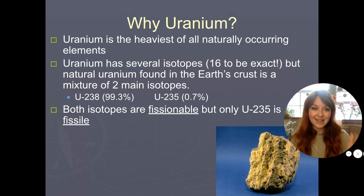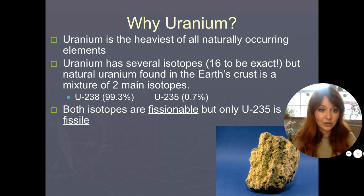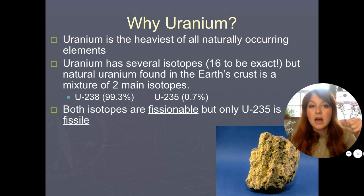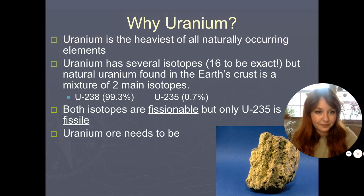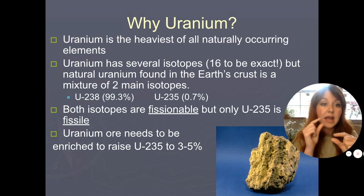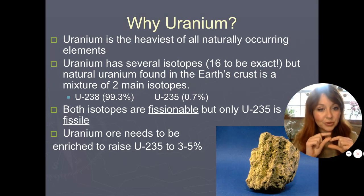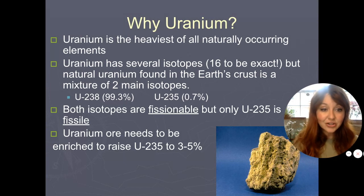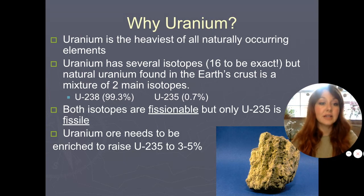In order to get uranium we can use for electrical power generation, you actually have to mine it out of the ground and spin it in a centrifuge to get a higher concentration of uranium-235. When you spin something in a centrifuge, you can separate out the different weighted elements. We call that enriched uranium ore. It needs to be enriched to raise uranium-235 to about three to five percent for use as fuel. The fuel is mostly uranium-238 but with a higher percentage of uranium-235, which means it is more radioactive, less stable, and can cause a chain reaction if allowed to continue.